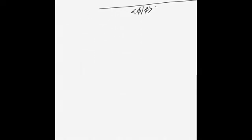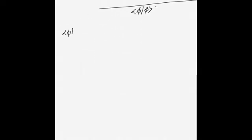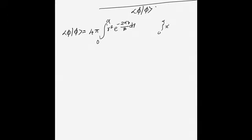When integrating over the angular parts — the θ integral from 0 to π of sinθ dθ and the φ integral from 0 to 2π — these give a factor of 4π. We need not worry further about the angular parts; only the radial integration from 0 to ∞ remains.